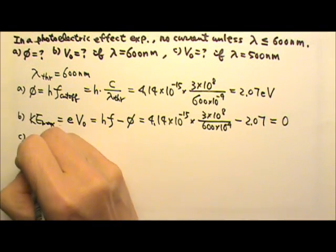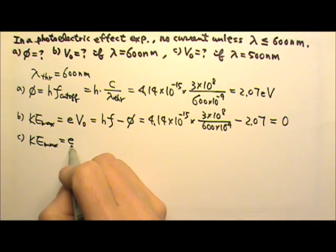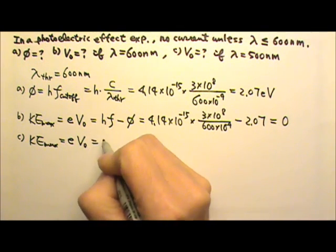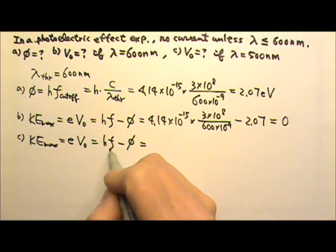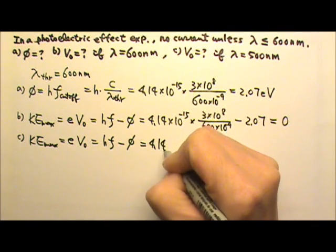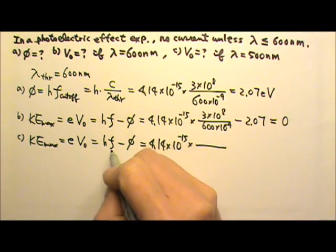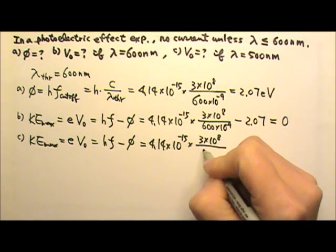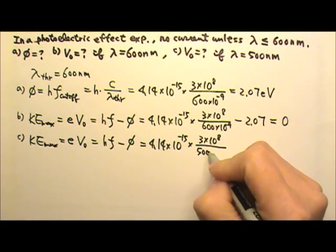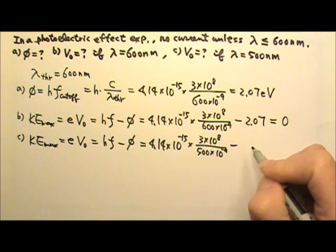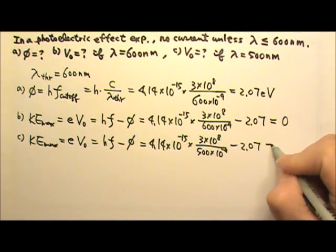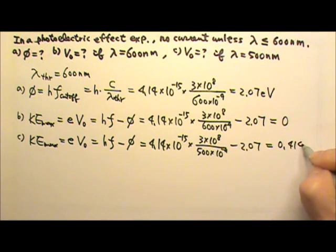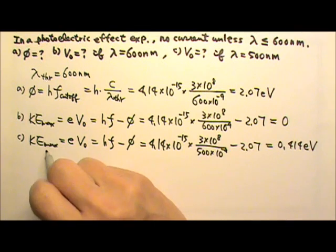For part c, the maximum kinetic energy is q times v, so 1e times the stopping voltage equals hf minus the work function. This frequency is not the cutoff frequency, so we do carry out the full calculation: 4.14 × 10⁻¹⁵ times c (3 × 10⁸) divided by the wavelength, which is now 500 nm, minus the work function of 2.07 eV from part a. Carrying out this calculation gives 0.414 electron volts.